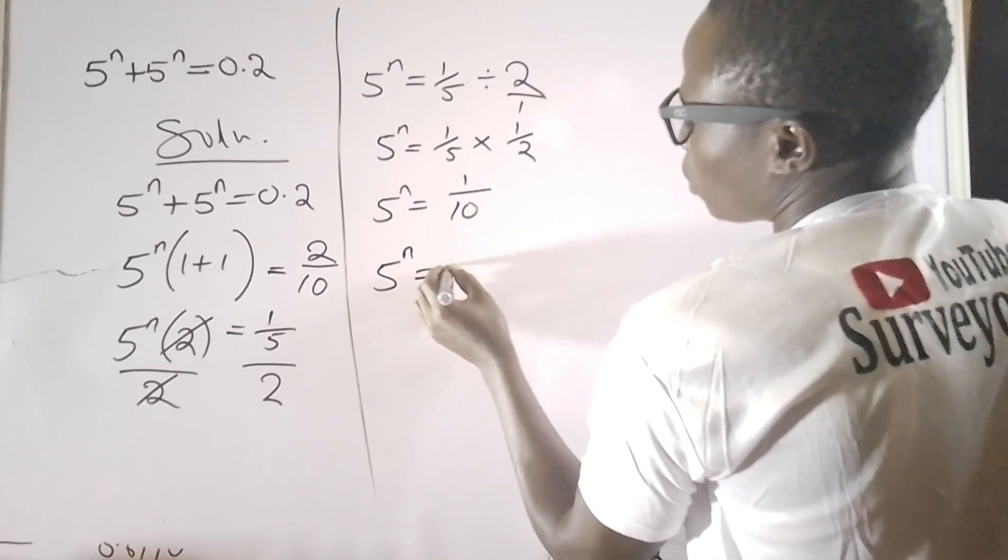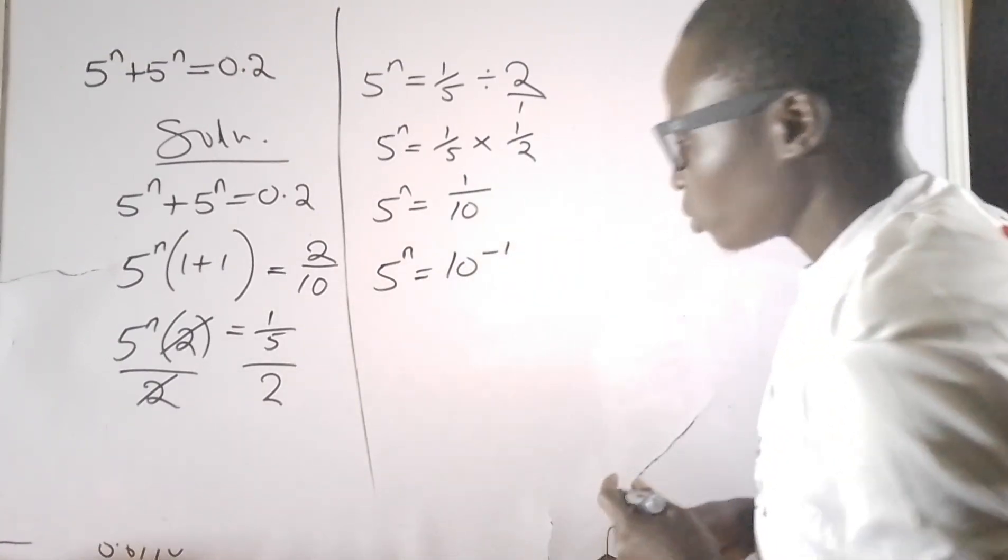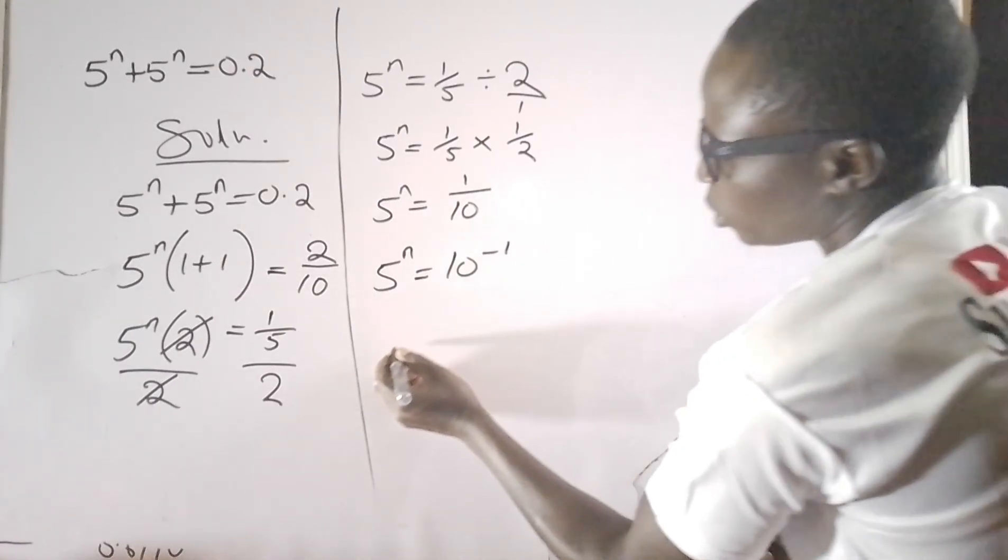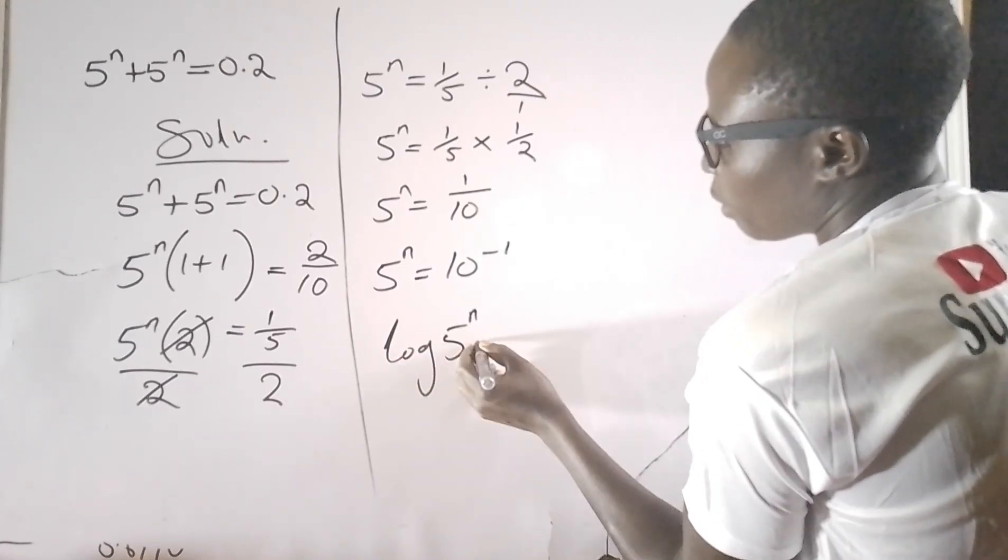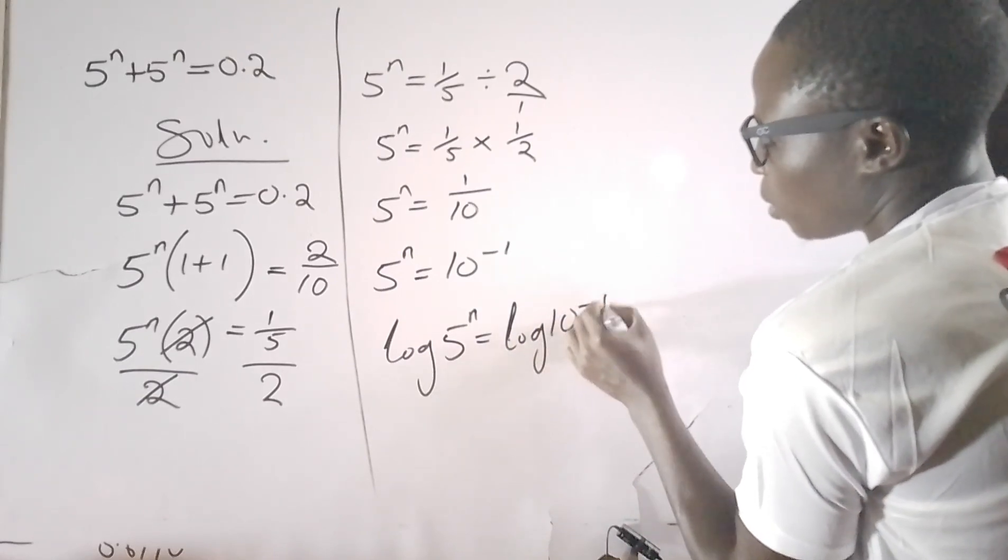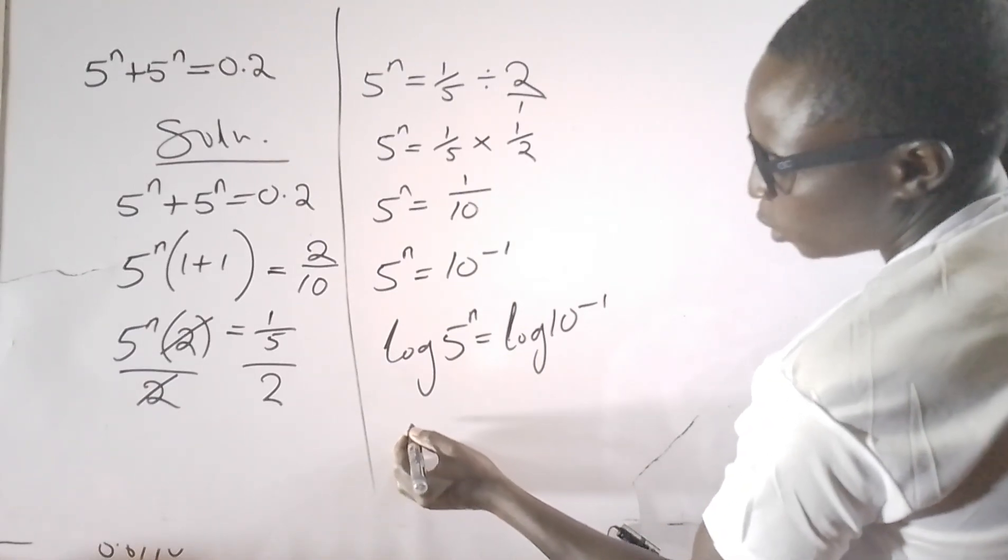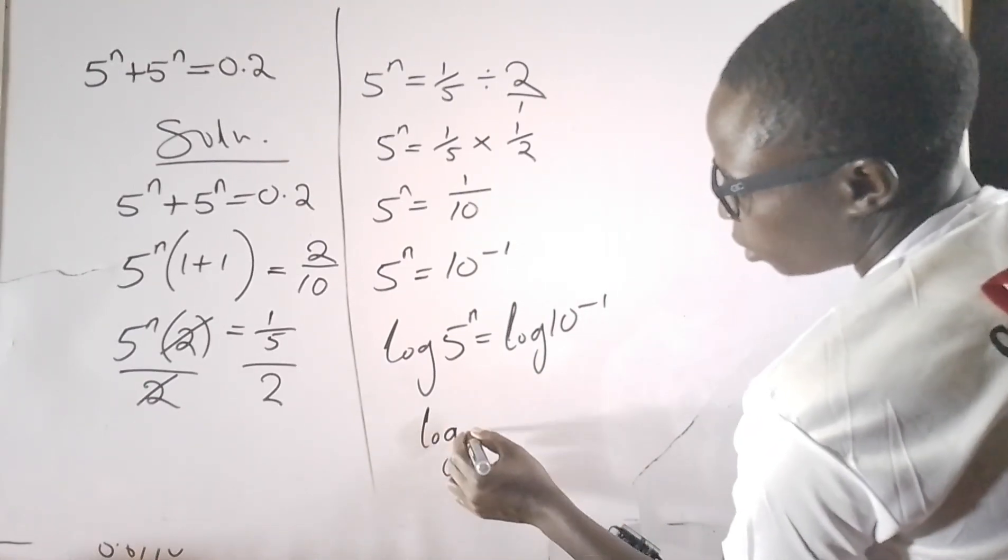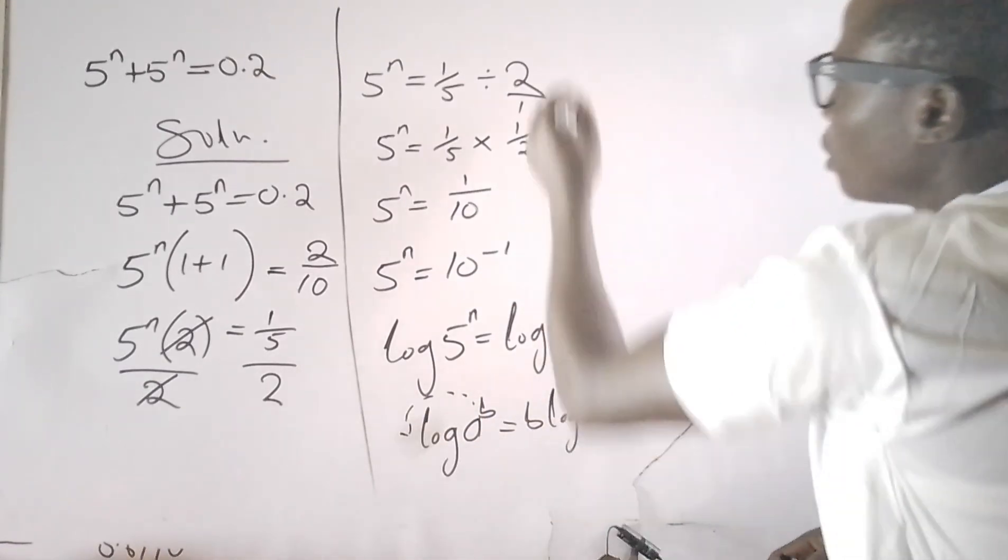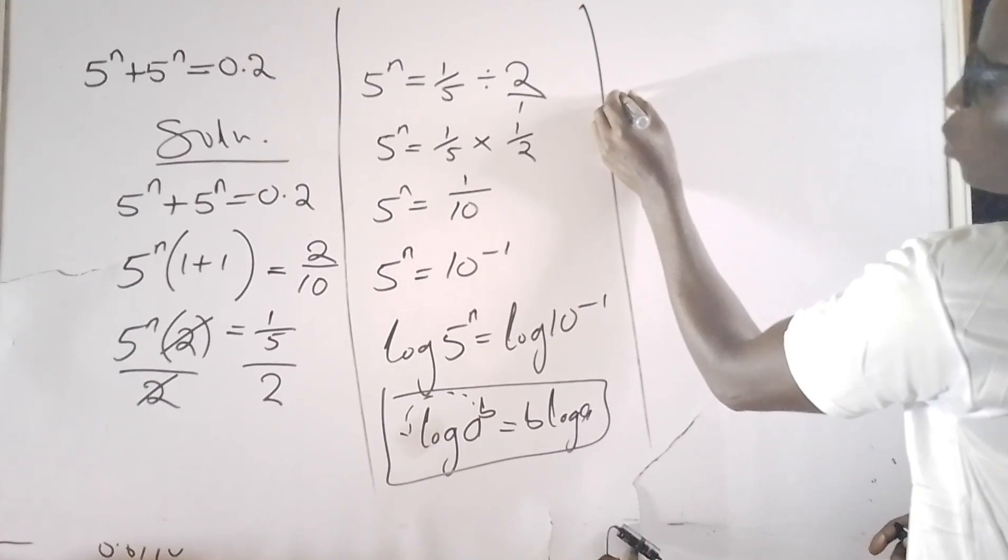5^n equals 10^(-1). I need to apply log to both sides. When I apply log to both sides, we have log(5^n) equals log(10^(-1)). Don't forget that there is a log property that says log(a^b) = b·log(a).